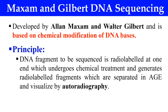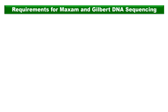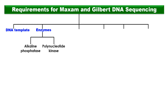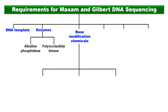For this Maxim-Gilbert DNA sequencing method, we require the following materials. First, we need the DNA template — the DNA fragment whose sequence we want to determine. We also require enzymes: alkaline phosphatase, which is required for the removal of terminal phosphate groups, and polynucleotide kinase, which is required for the addition of radioactive phosphate groups. Next, we require base modification chemicals.